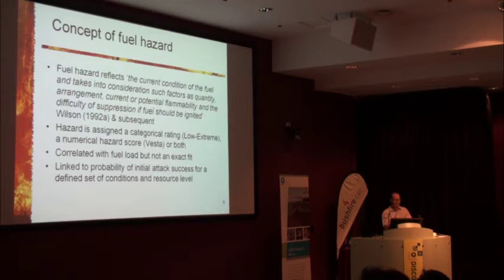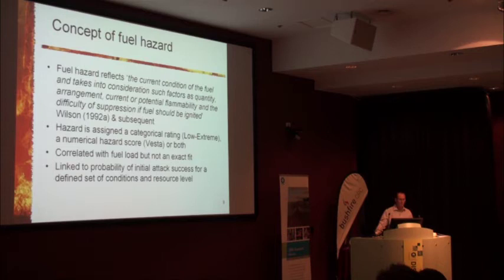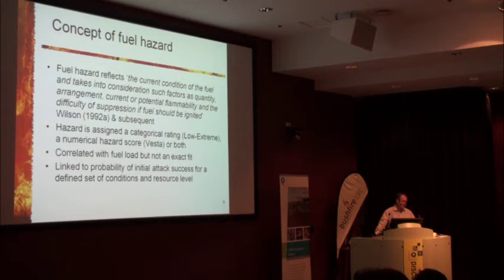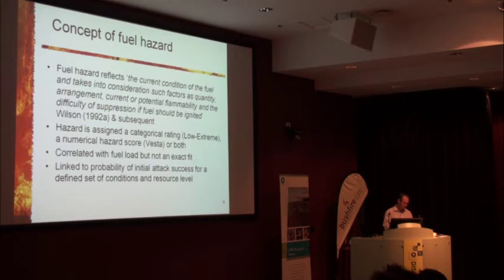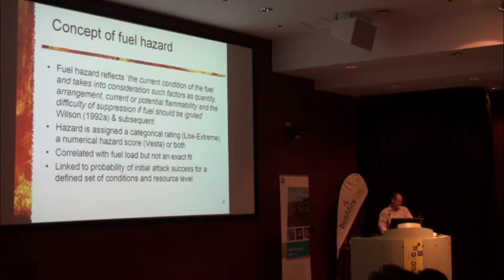That's generally been in the form of a categorical rating from low, moderate, through to extreme — which you'll be familiar with from the fire danger scale. With the Project Vesta experiments, we adopted a similar approach based closely on the Victorian approach, but using a numerical hazard score. Subsequent to those experiments, we've worked closely with Greg and Kevin to align those two systems more closely, so that the latest version of the overall fuel hazard guide incorporates considerable Vesta information and provides both numerical and categorical hazard descriptions.